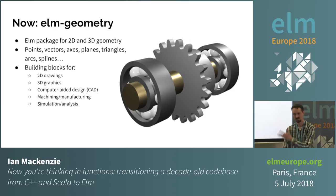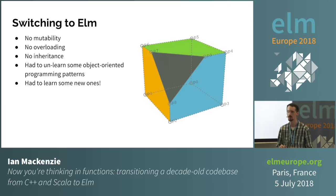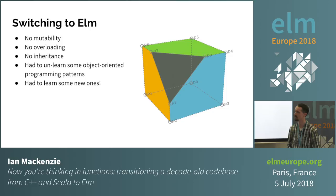What I really want to talk about today is the transition going from C++ and Scala to Elm — what that involved and what I learned. Switching to Elm, there are some aspects of object-oriented languages you don't have: there's no mutability, which wasn't really a problem for me anyway. But you don't have overloading — you can't have one function that works on multiple different types of arguments. You don't have inheritance, so you can't inherit functionality between different classes. As a result, I had to unlearn some object-oriented patterns and learn some new ones.